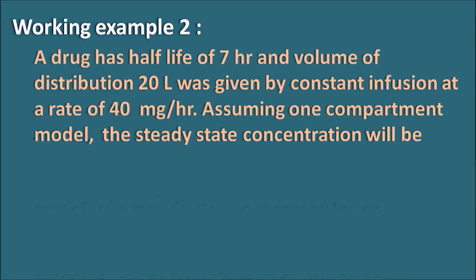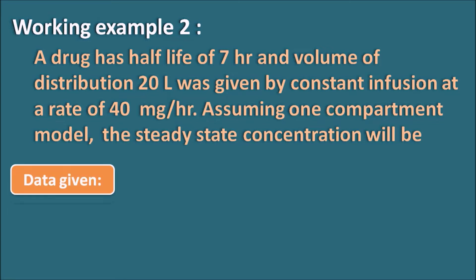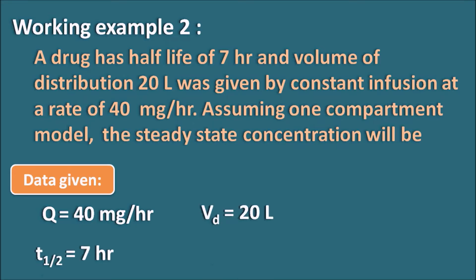Working example two: A drug has a half-life of 7 hours and volume of distribution of 20 liters, given by constant infusion at a rate of 40 mg per hour. Assuming a one compartment model, what is the steady state concentration? Data given: Q = 40 mg per hour, T½ = 7 hours, and Vd = 20 liters. We have to calculate the steady state concentration CSS.